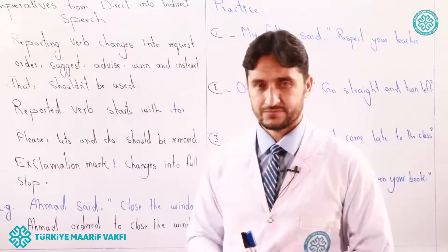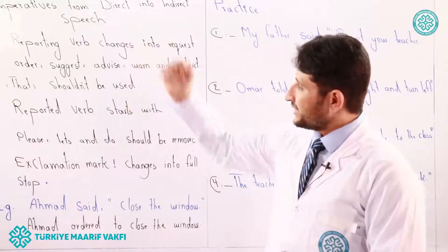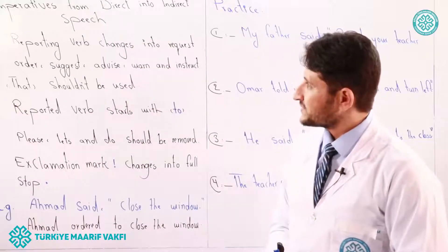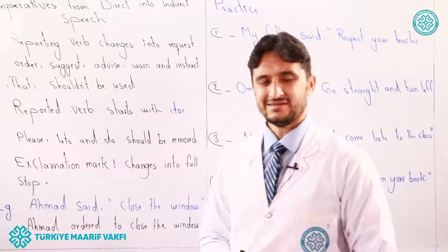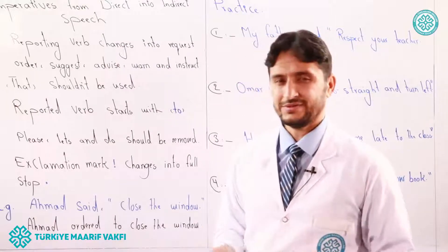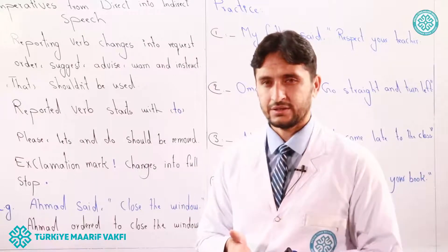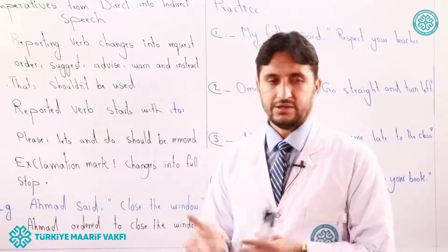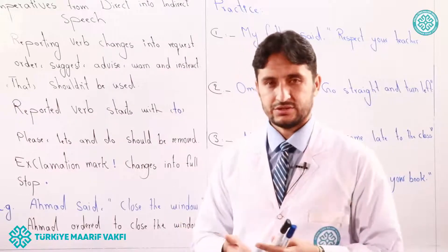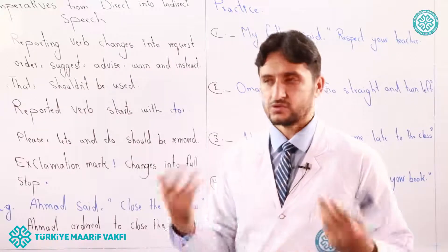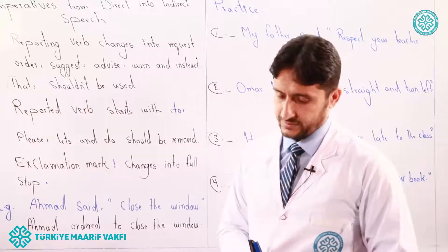So let's start. An imperative sentence is quite simple. An imperative sentence is a sentence that expresses order, command, request, advice, suggestion, instruction, direction, warning, and so on. To change it from direct speech into indirect speech, we have to consider five rules, which are quite simple and straightforward.